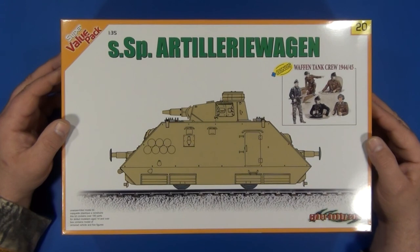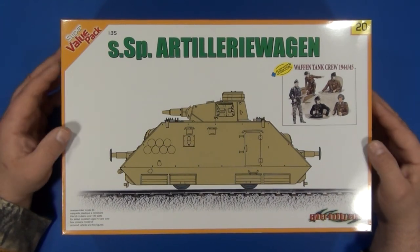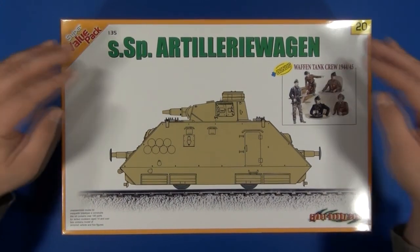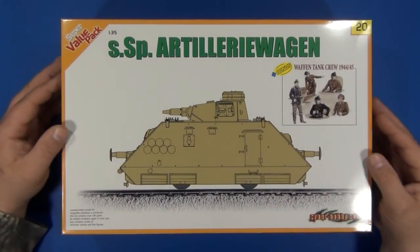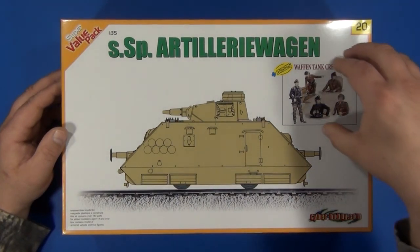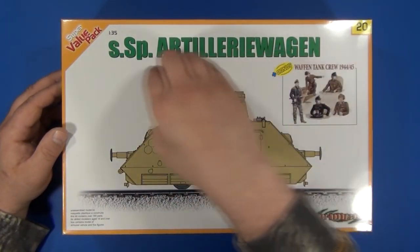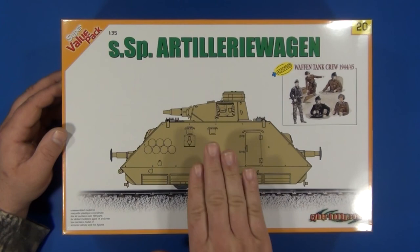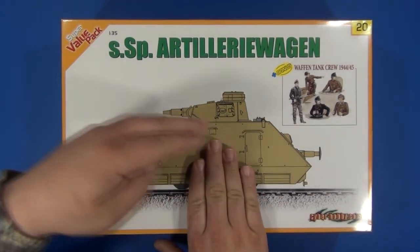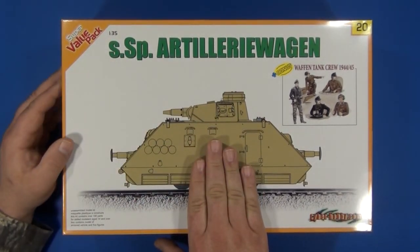So in closing, future plans for this kit: as I mentioned before, I'd like to build a diorama for it, roughly the same size as probably what this box is here. I would have the artillery wagon on the tracks, and they'd be stopped like at a crossroads out in the country.